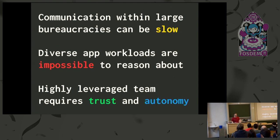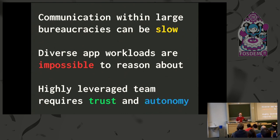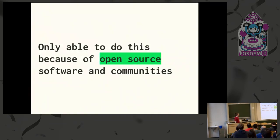We have a small team of about nine engineers and a couple of other folks, but we've got to run about a thousand apps. We've got to trust each other and develop practices within our software development process that allow us to act with autonomy, collaborate asynchronously, and not have unnecessary meetings. We're only able to build and run this platform because of the open source community around Cloud Foundry and Concourse — that's super, super valuable.